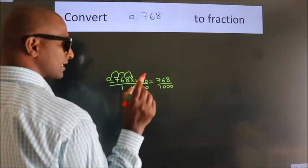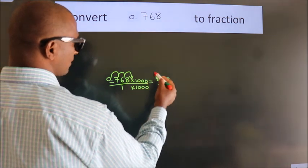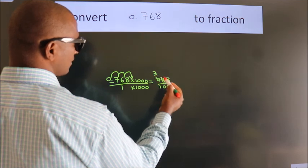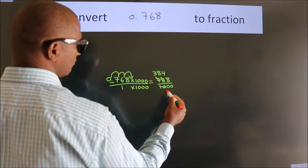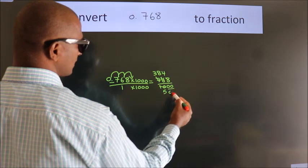Now I cancel with 2. 2 threes, 2 eights, 2 fours, 2 fives, this zero as it is down.